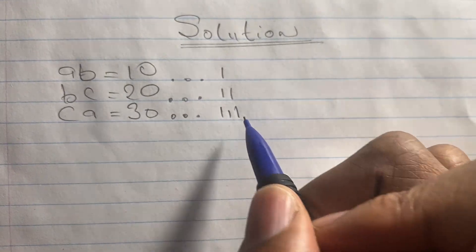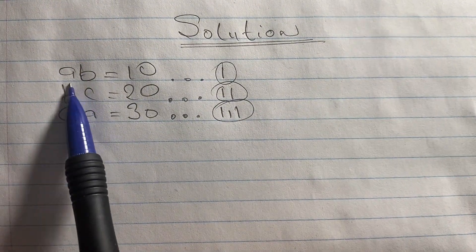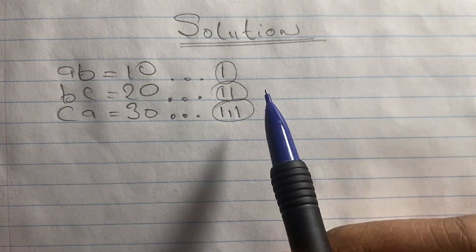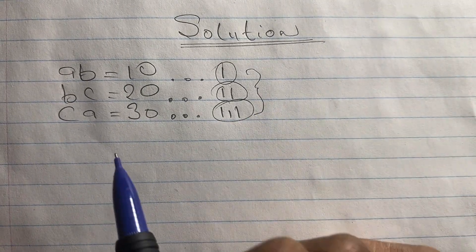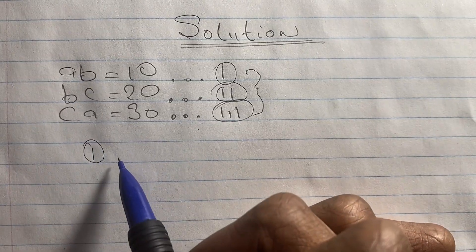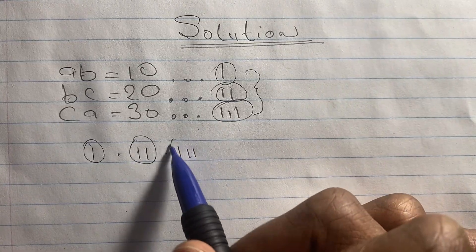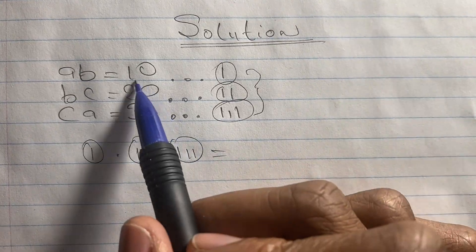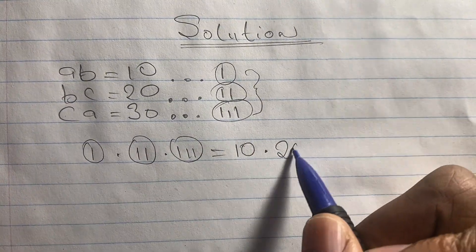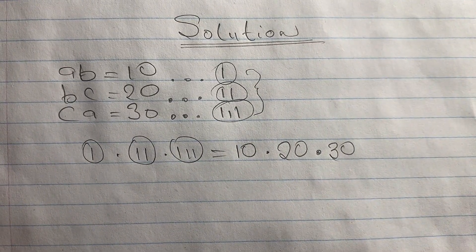Now let's look at our equation. Here we can see that we have equation 1, equation 2 and equation 3. We can start to solve the values of a, b and c by multiplying all three equations together. This means that equation 1 times equation 2 times equation 3 also equals 10 times 20 times 30, because in systems of equations, the values of a, b and c are consistent throughout all three equations.